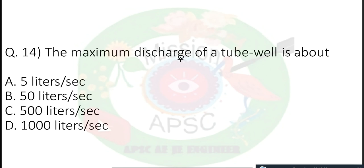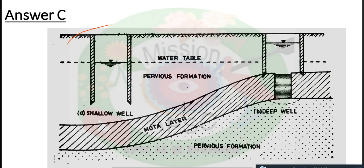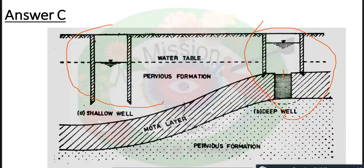Next: The maximum discharge of a shallow well is about 50 liters per second. Next question: As compared to shallow wells, deep wells have — more depth, less depth, or more discharge? Deep wells are mainly inserted for extracting more discharge, so they have more depth and more discharge than shallow wells.